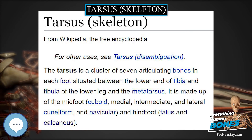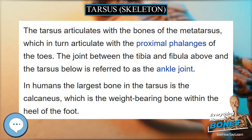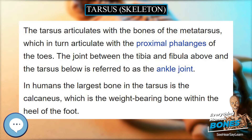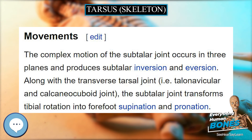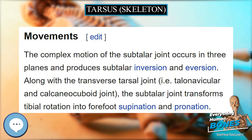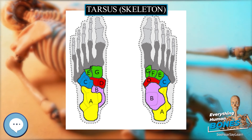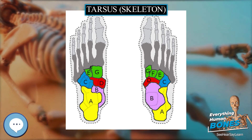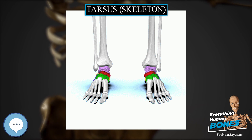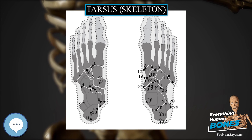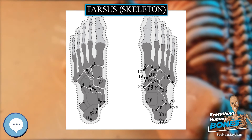The fifth distal tarsal disappears relatively early in evolution, with the remainder becoming the cuneiform and cuboid bones. Reptiles usually retain two centralia, while mammals typically have only one — the navicular. In birds, the tarsus has disappeared, with the proximal tarsals having fused with the tibia, the centralia having disappeared, and the distal bones having fused with the metatarsals to form a single tarsometatarsus bone, effectively giving the leg a third segment.